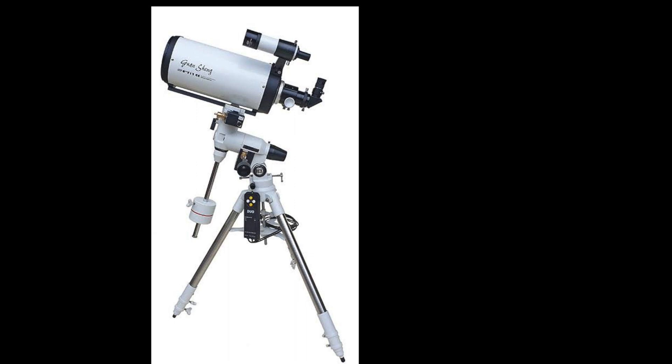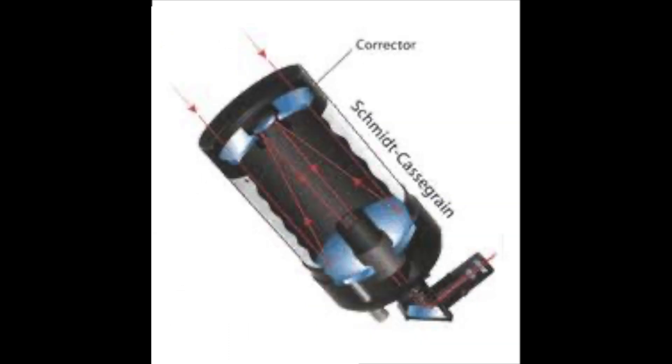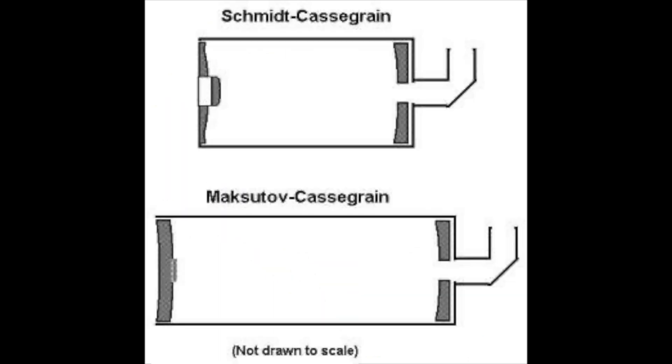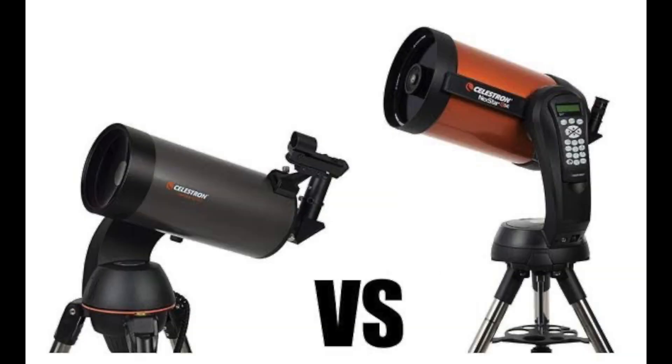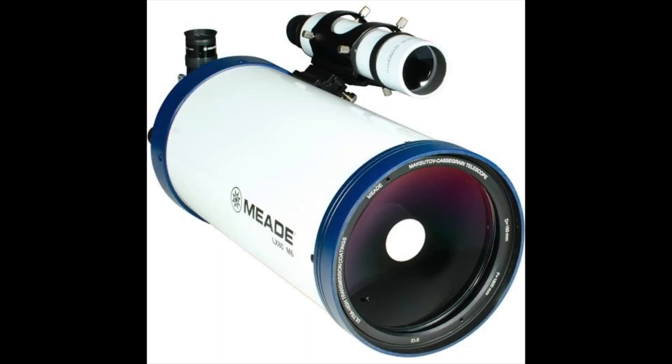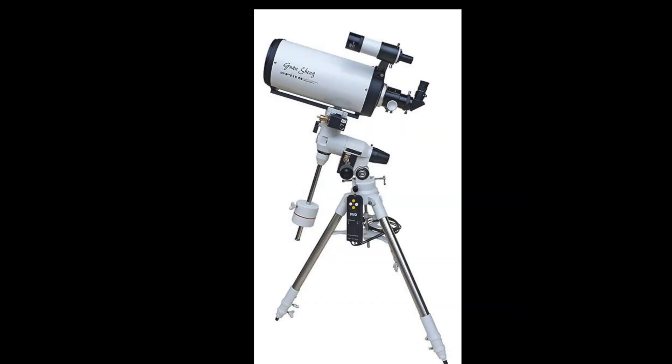A type of catadioptric telescope is the Cassegrain series. There are different types of Cassegrain - for example, the popular Schmidt-Cassegrain telescope and the Maksutov-Cassegrain telescope. The Schmidt-Cassegrain has a different kind of optical glass in the front, and Maksutov-Cassegrain with a somewhat similar design has a different kind of glass. Schmidt-Cassegrain has a rather complex curve in the connector plate, and Maksutov is a deep dish meniscus.